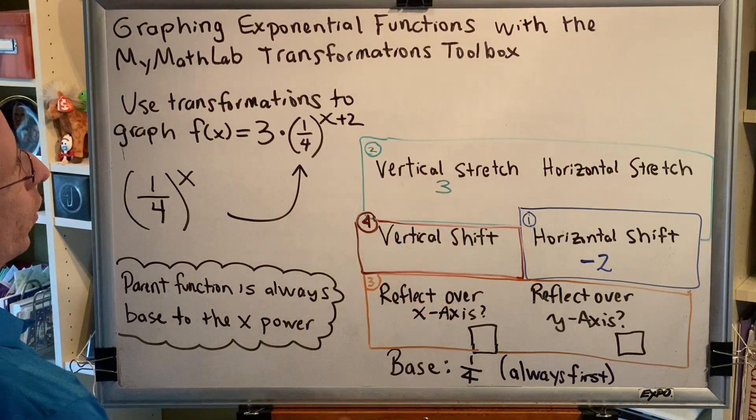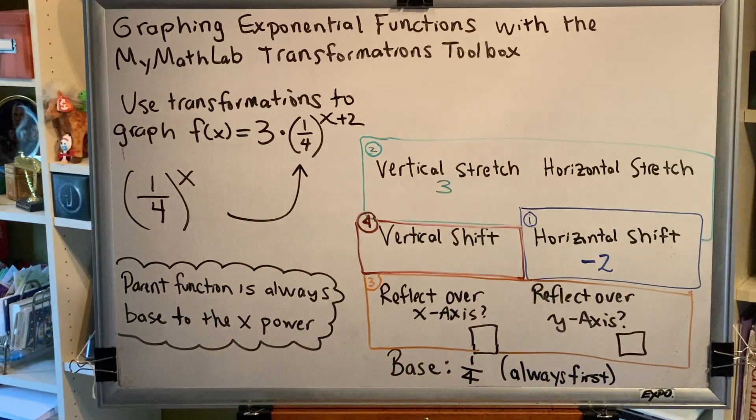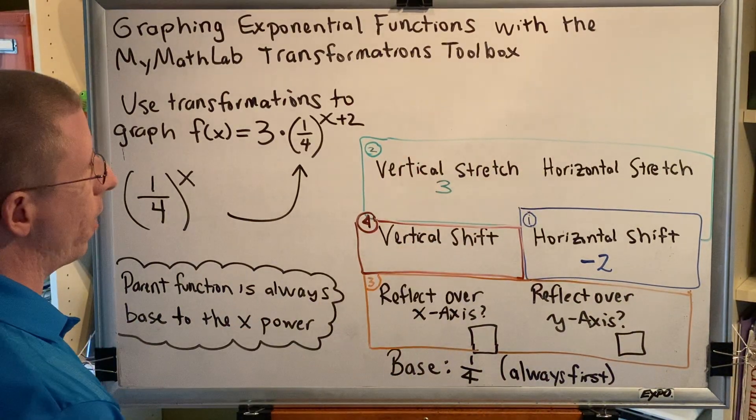And the last thing we would check for is vertical shifting, which would show up as adding or subtracting outside far from x, and we don't have any of that either.